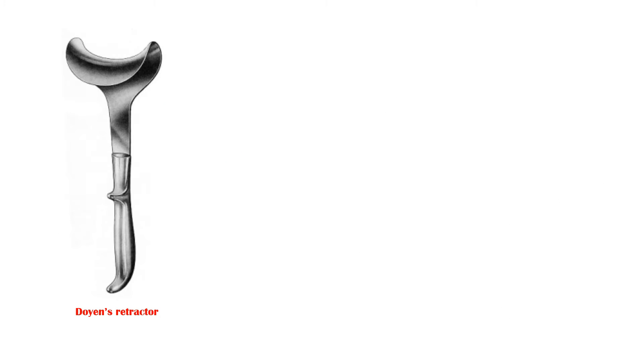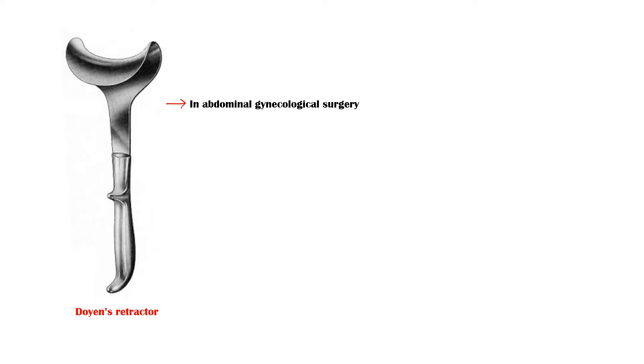Goyen's retractor is mainly used in abdominal gynecological and obstetric surgeries to hold back the abdominal incision. It is also used in caesarean sections.